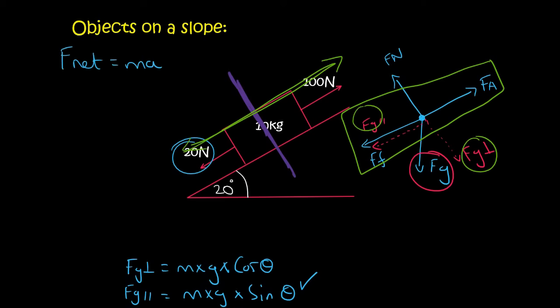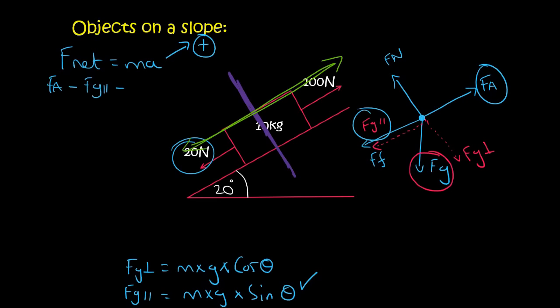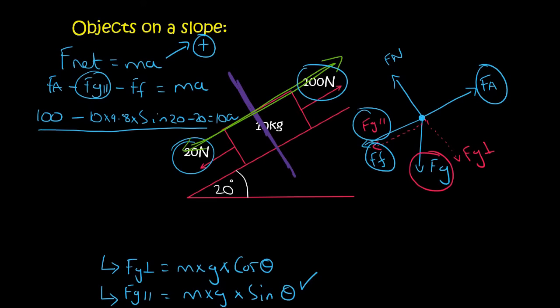Now when you write down F net equals MA, choose a direction. So let's say up the slope is positive like that. And so now you literally just look at your forces. Okay, so we've got FA minus FG parallel minus the force of friction. And so that's going to equal to MA. Now your applied force is 100. FG parallel, Kevin, what is that? Guys, I remember I just told you that FG parallel is equal to mass, which is 10 times by 9.8 times by the sin of the angle, which is sin 20 minus the friction. And that's equal to the mass, which is 10 times by the acceleration, which we don't know. So the whole left hand side can be typed in on the calculator now. And so the acceleration will be 4.65 meters per second to the minus 2. And then just say up the slope.